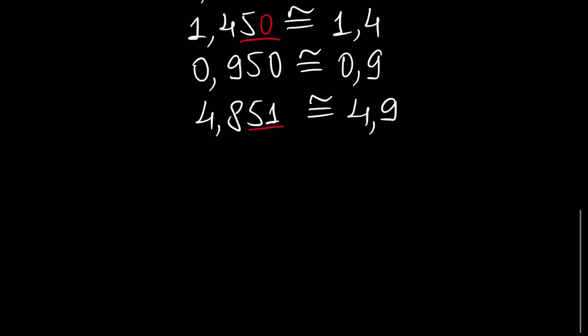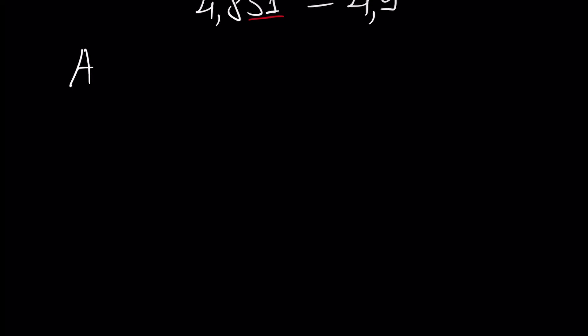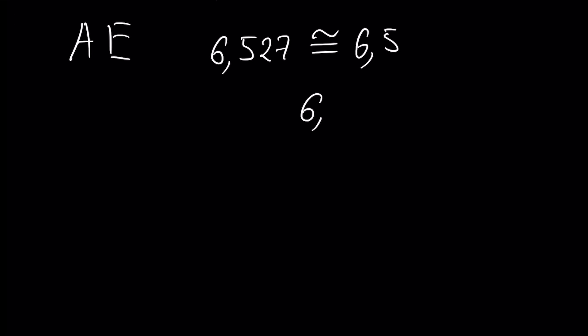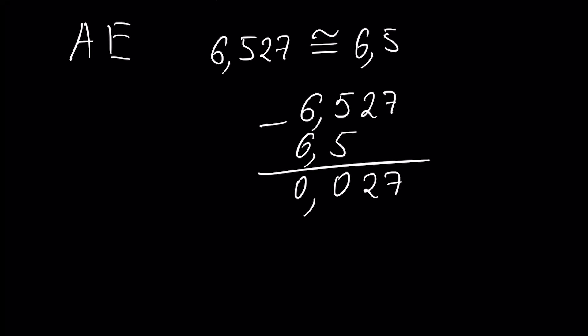Let's talk about absolute error and give a definition. Absolute error, let's write it as AE, is the difference between the number itself and its approximation. For example, we have 6.527 and we have an approximation of this number: 6.5. The positive difference — we subtract the smaller number from the greater number — is 6.527 minus 6.5, which is equal to 0.027. And this is the absolute error.